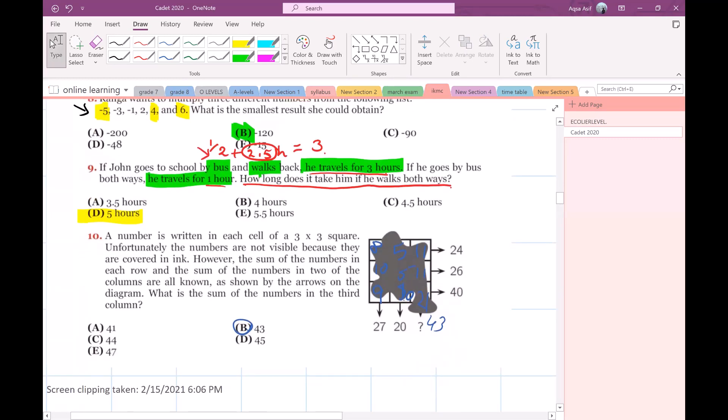Question number 10: A number is written in each cell of a 3 by 3 square. Unfortunately the numbers are not visible because they are covered in ink. However, the sum of numbers in each row and the sum of numbers in two of the columns are known as shown by the arrows on the diagram. What is the sum of the numbers in the third column?